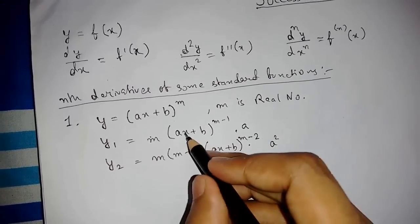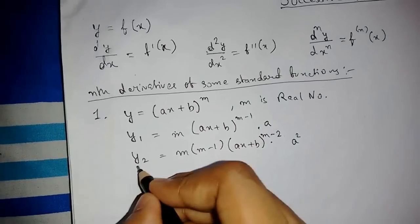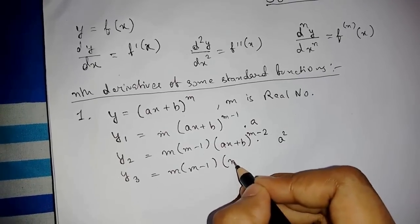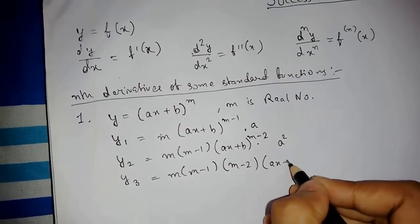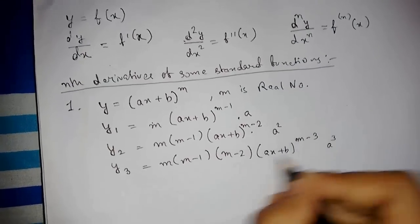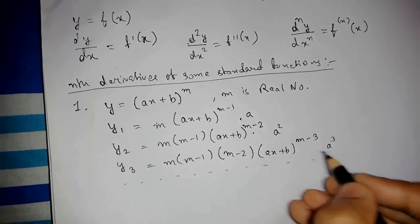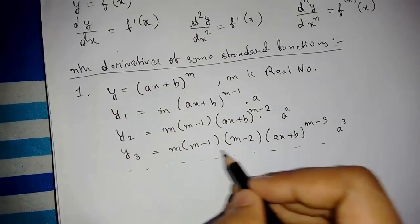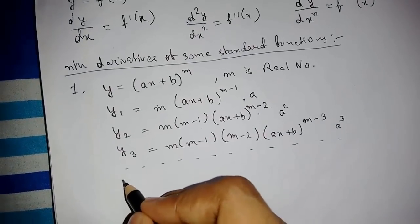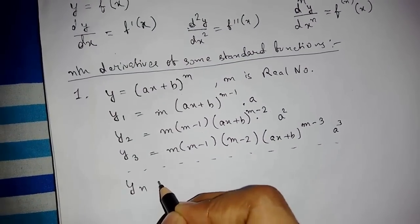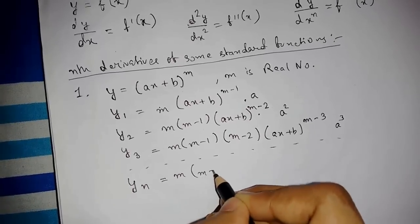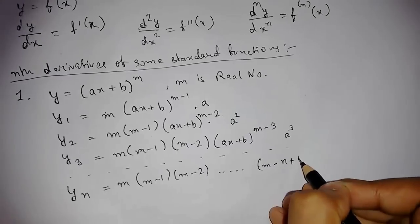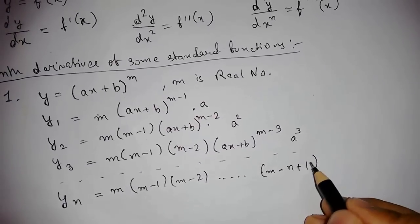Because a and again differentiation of a gives a². So y₃ will be m(m−1)(m−2) times (ax + b)^(m−3) times a³. Continuing this process, we can see the general pattern emerging. So we can directly write our nth derivative: it will be m(m−1)(m−2)···(m−n+1) times (ax+b)^(m−n) times aⁿ.